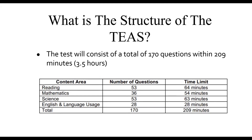There are four major categories, and the test is structured so that reading consists of 53 questions with a little over an hour to complete. Math has fewer questions, but they're usually more intensive, so while you have 54 minutes, some questions may take more time — structure your time accordingly. Science has 53 questions, again a little over an hour, and about a minute per question for English and language usage. Total time is about three and a half hours, so make sure you're prepared to work through the questions in a timely fashion.